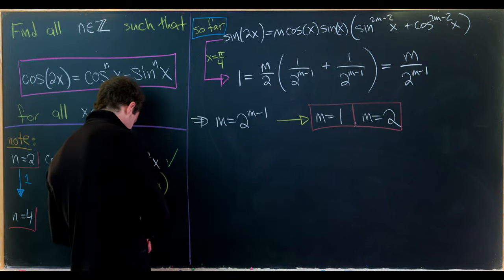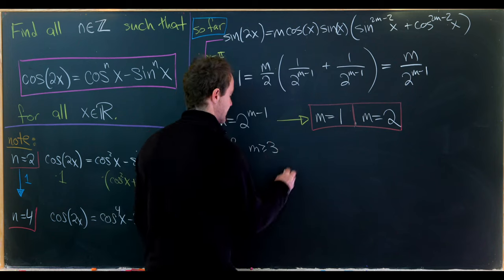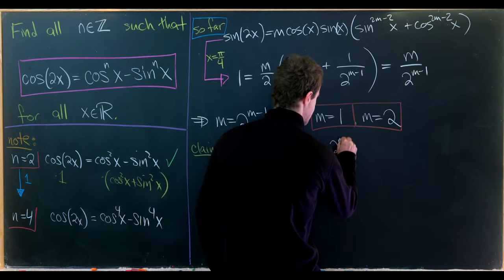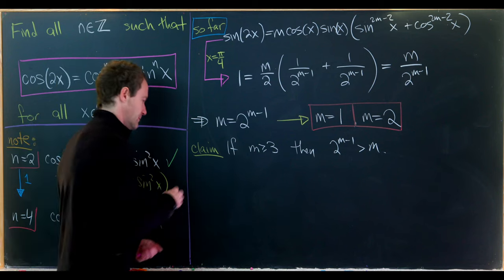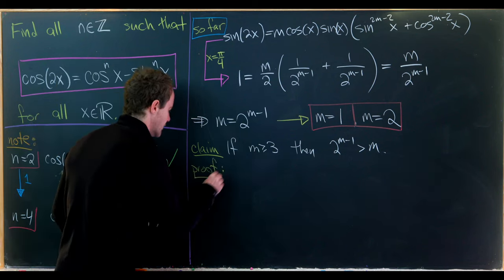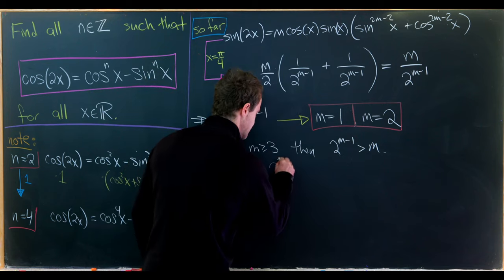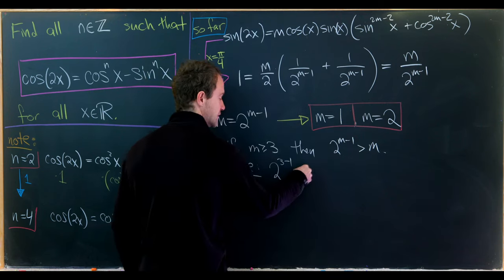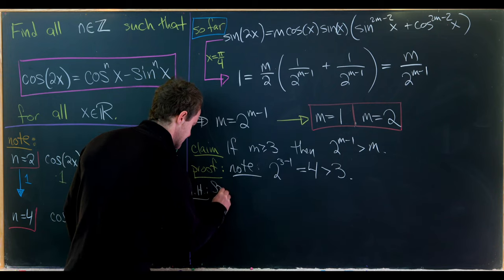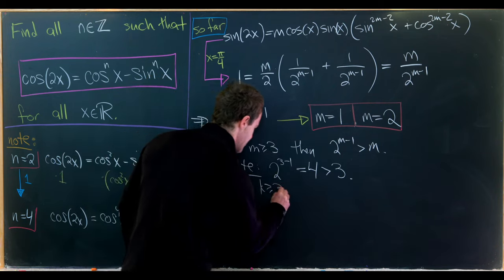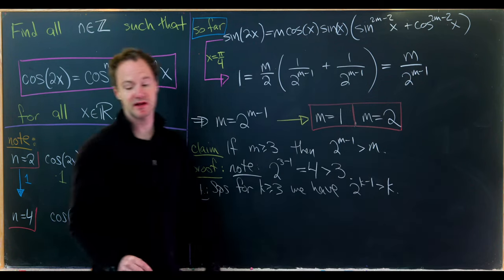Let's make this claim: if m is bigger than or equal to 3, then 2 to the m minus 1 is strictly bigger than m. We will use induction. For our induction hypothesis, we'll set m equal to 3. Note that 2 to the 3 minus 1, that's 2 to the 2, which equals 4, which is clearly bigger than 3. So our base case is satisfied. Now we suppose for some k bigger than or equal to 3, we have 2 to the k minus 1 is strictly bigger than k.